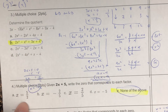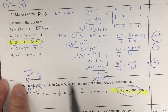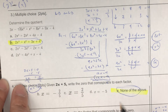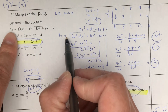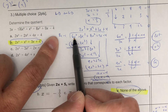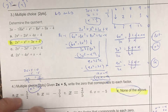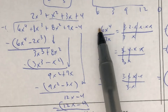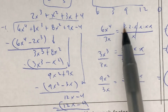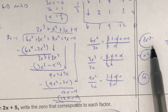Question number 3: determine the quotient. The quotient is the answer. I chose to use long division. I have 3x minus 1. The first thing I have to do is division. 3x goes into 6x to the fourth. 6 is 3 times 2; x to the fourth divided by x — canceling those out — you're left with 2x to the third. And that is why I put 2x to the third up here.